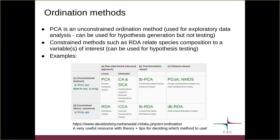PCA is one example of an ordination method. Looking at different ordination methods from a wider perspective, we can split them into two categories: unconstrained and constrained ordinations. PCA is an example of an unconstrained ordination method, which means we can use it for exploratory data analysis when we don't necessarily have much information available to generate testable hypotheses.